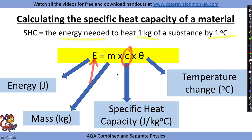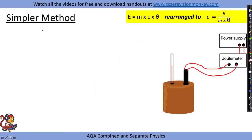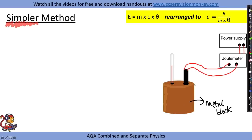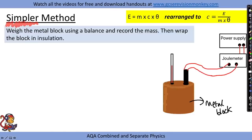For this practical we need to work out the energy transferred to our material, the mass, and the temperature change. I'll take you step by step through the practical. We'll start with a simpler method first. Let's say we have a metal block — the material we want to measure the specific heat capacity of. In the exam it could be aluminium, copper, or any other substance. The first thing we do is weigh the metal block using a balance and record the mass.